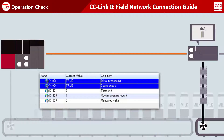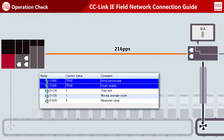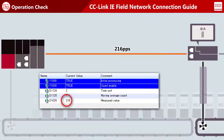The remote station starts counting the number of pulses. The count value is sent to the master station over the network. The master station updates the measured value.